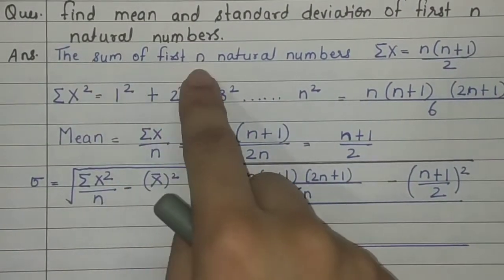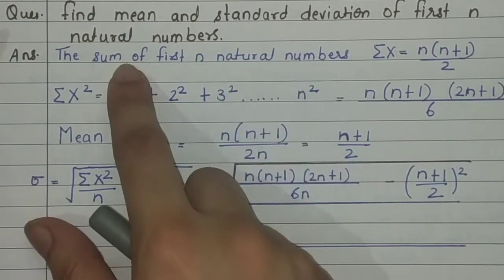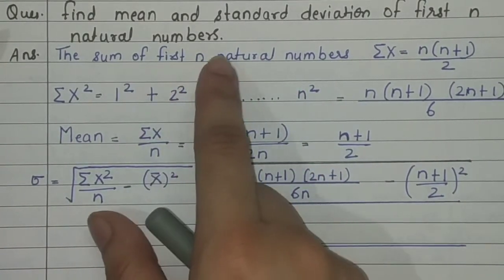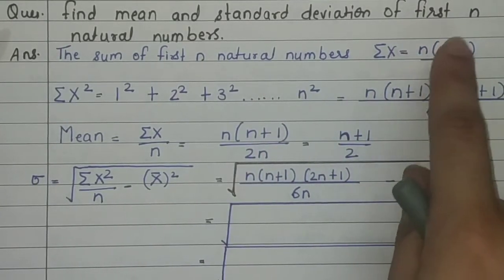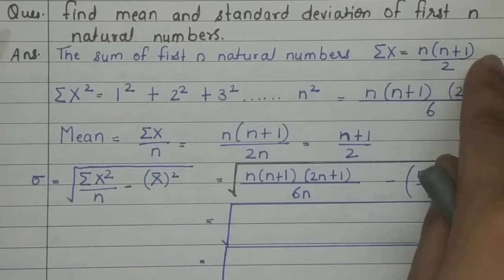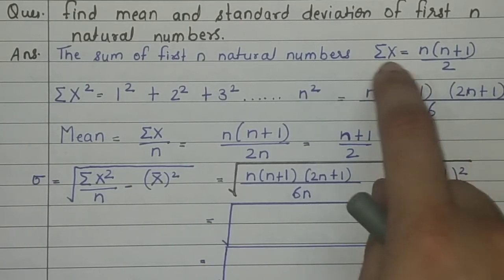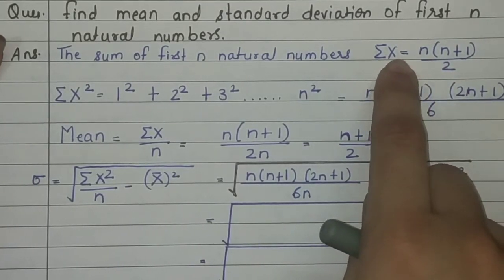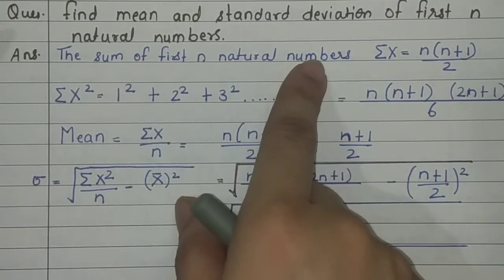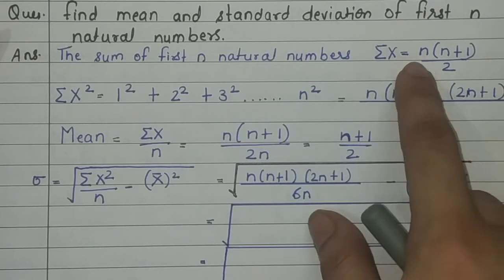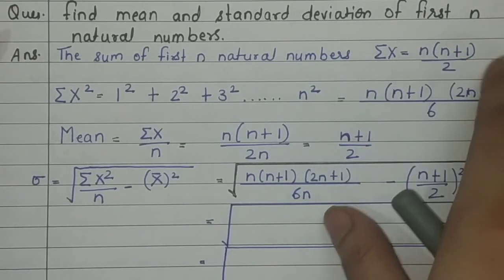From our school time, we know that the sum of the first n natural numbers is n(n+1)/2. For example, for the first 7 numbers, it is 7(7+1)/2. For any n natural numbers, Σx = n(n+1)/2. Also, the sum of squares of the first n natural numbers is Σx² = n(n+1)(2n+1)/6.